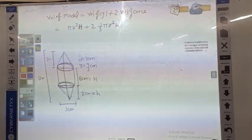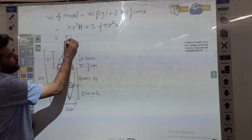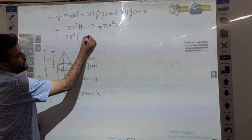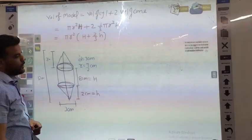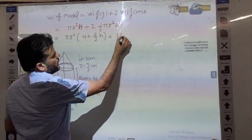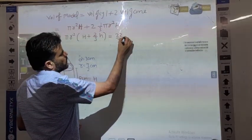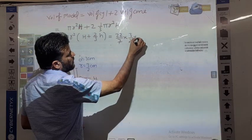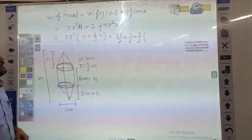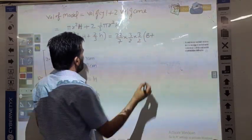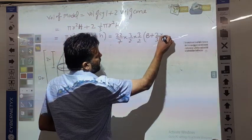Pi r squared h plus 2 times 1/3 πr²h. The value is π = 22/7, r = 3/2, r² = (3/2)², H (capital h), and small h. Capital H plus 2/3 times 2.